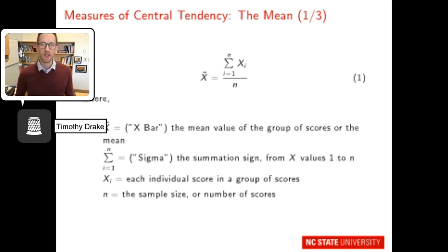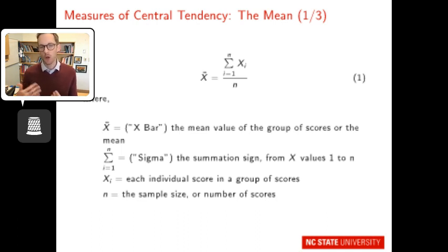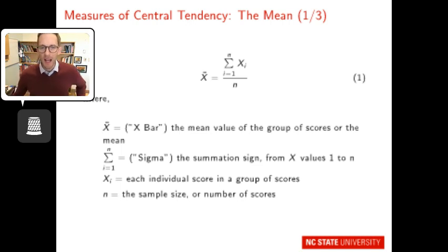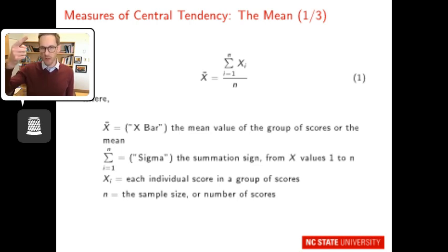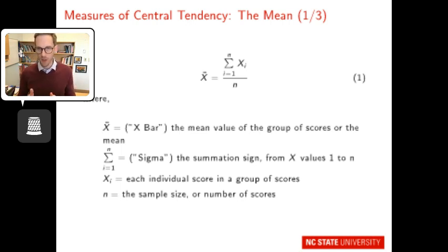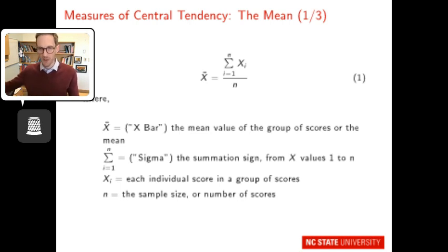The first measure of central tendency is the mean — the average. The Greek notation shows that x-bar represents the mean value of a group of scores. It equals sigma from i equals 1 to n of x-sub-i, divided by n. You take the first individual score, add it to the second and third, all the way to the nth in your sample, then divide by n — the sample size or number of scores.